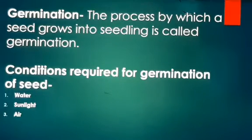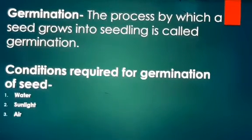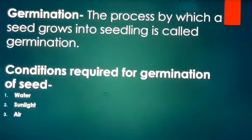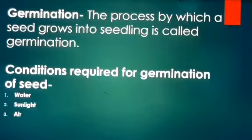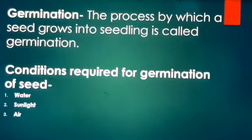Water and oxygen help in the activation of enzymes present in the cotyledons, and these enzymes help in the digestion of stored food present in the cotyledons. As a result, energy is evolved and utilized by the embryo to grow into a new plant. When all such conditions are present, the radicle grows down into the soil to form the root of the new plant, and the plumule grows upward and forms the shoot of the plant. The cotyledons then dry and fall off.